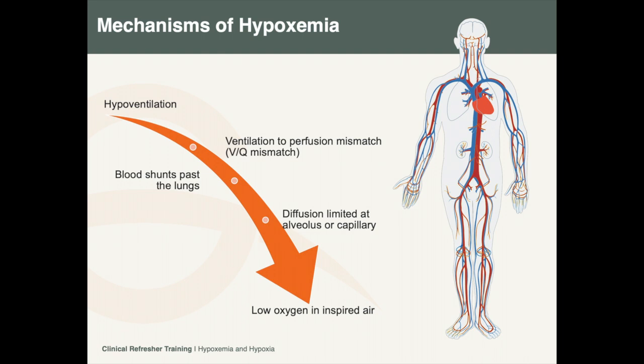A right-to-left shunt occurs when deoxygenated blood passes to the left side of the heart for recirculation without being reoxygenated by the lungs. Shunts can occur in the lungs or through heart defects.